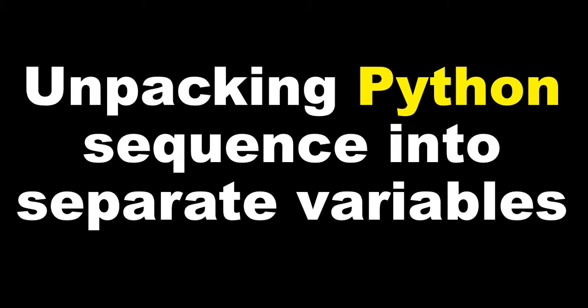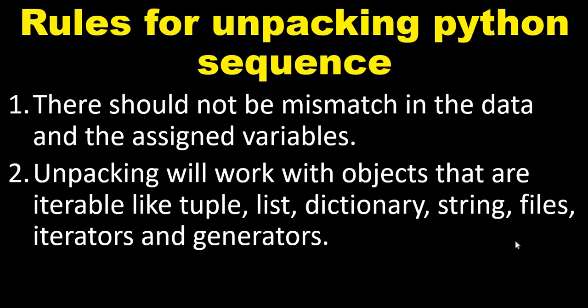Hi everyone, welcome to the session where we'll learn about unpacking Python sequences into separate variables. So what are the rules for unpacking a Python sequence? The first rule is there should not be a mismatch in the data and the assigned variables. The second rule is unpacking will work with objects that are iterable, like tuple, list, dictionary, string, file, iterators, and generators.